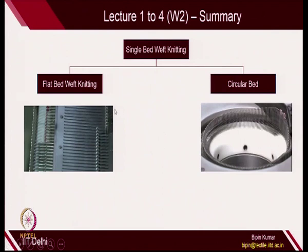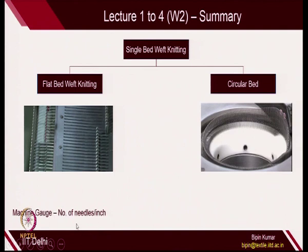We also covered technological machines related to single bed weft knitting — two types: flatbed weft knitting, where needles are placed on a flat bed in tricks, and circular bed, where needles are placed in tricks on a cylindrical platform. Machine gauge is an important parameter deciding how closely needles are placed on the bed. Number of needles per inch is defined as machine gauge, denoted as E4 or E50. E4 means 4 needles per inch, E50 means 50 needles per inch. Naturally, more needles per unit length produces a finer fabric, so machine gauge determines fabric density.